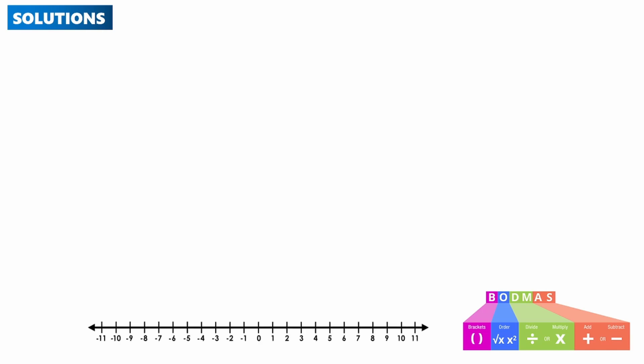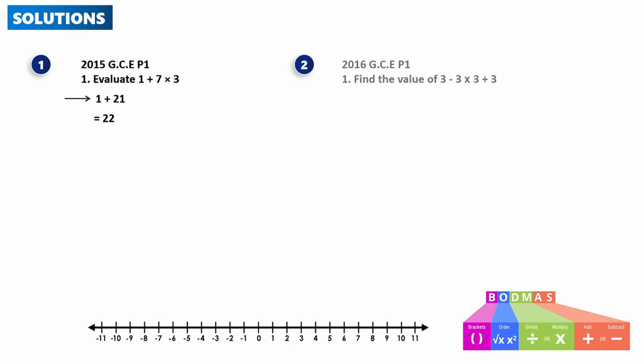At the bottom we have the BODMAS guide and a number line. Question 1 from 2015 GCE Paper 1: evaluate 1 plus 7 times 3. From BODMAS, we begin with multiplication: 7 times 3. Then add that to 1, so the first step is 1 plus 21, and 1 plus 21 equals 22.